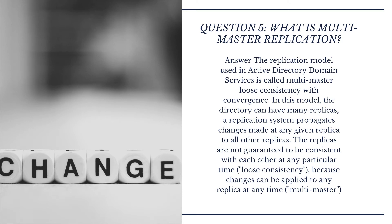Question 5: What is multi-master replication? Answer: The replication model used in Active Directory Domain Services is called multi-master loose consistency with convergence. In this model, the directory can have many replicas. A replication system propagates changes made at any given replica to all other replicas. The replicas are not guaranteed to be consistent with each other at any particular time (loose consistency), because changes can be applied to any replica at any time (multi-master).